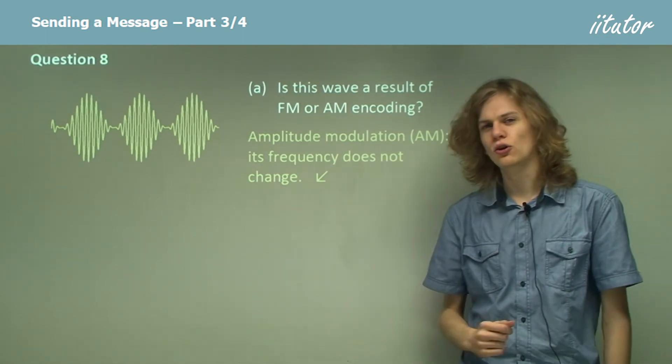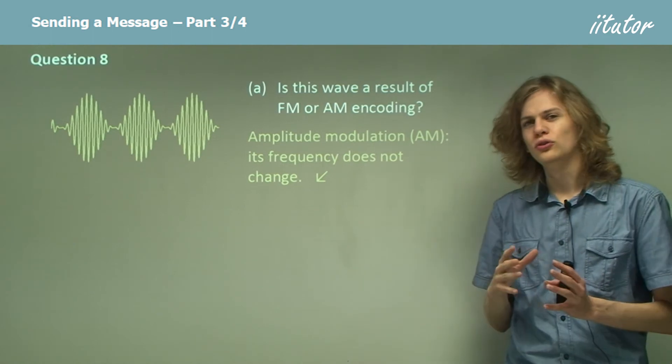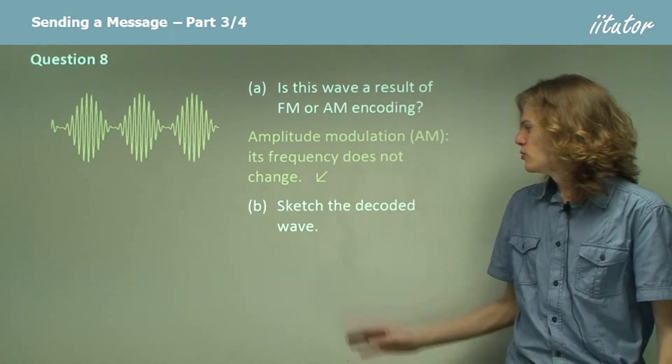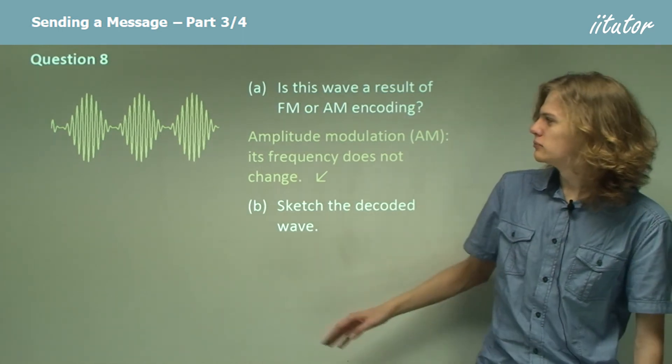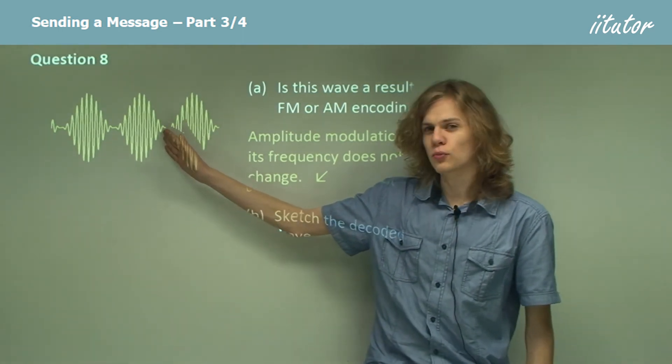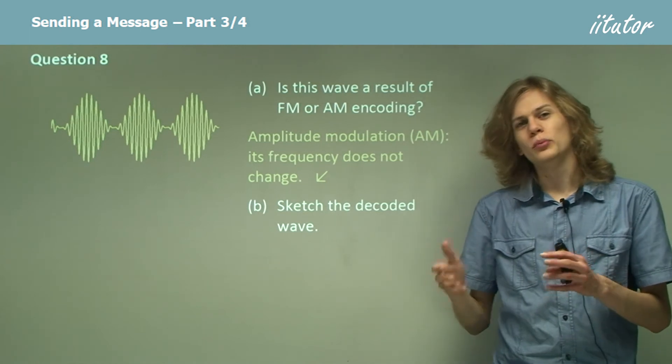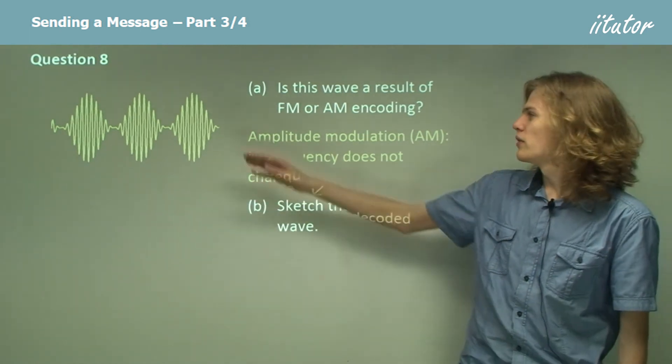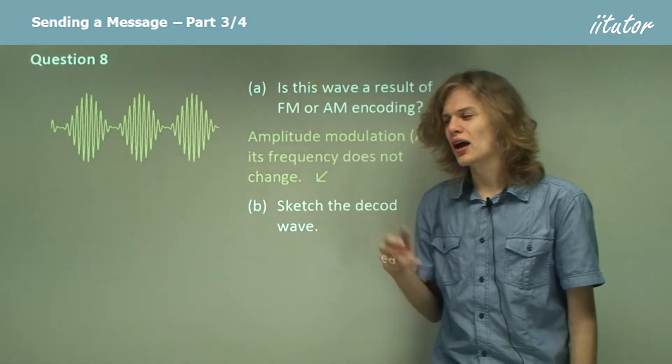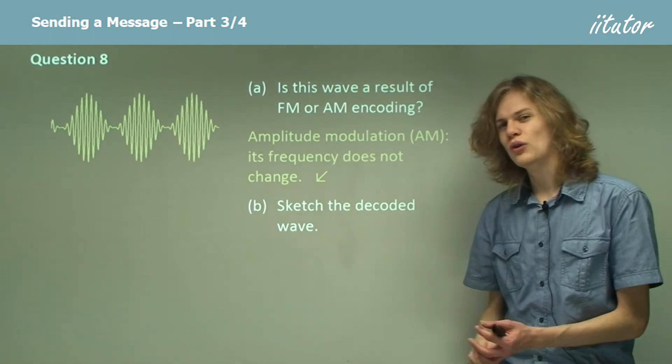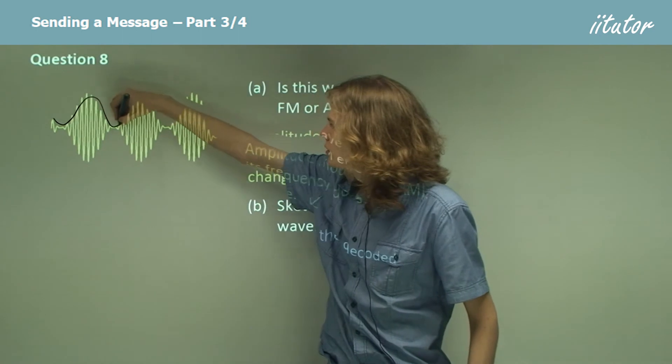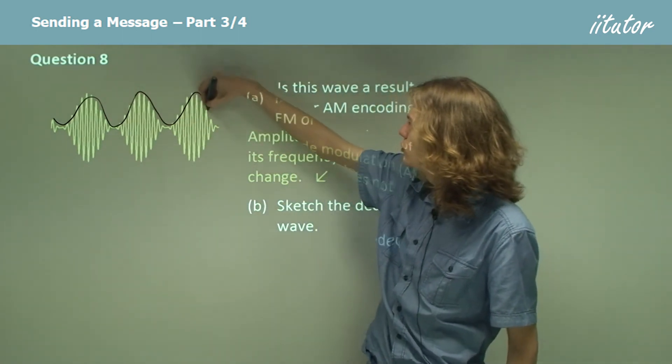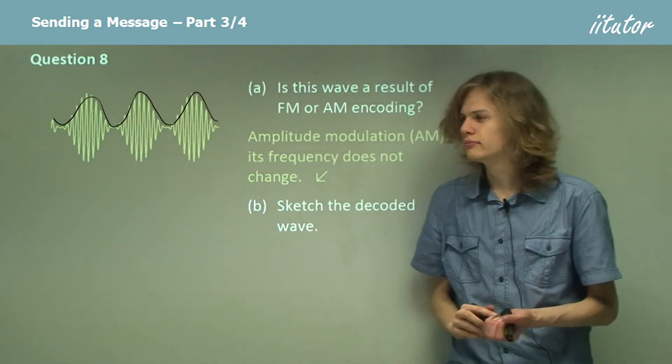The frequency does not change, the amplitude does. That means that the sound wave, or in this case the sine wave encoded, changes the amplitude. So sketch the decoded wave. Well, we know that when the amplitude is very small, the wave will be at a trough. When the amplitude is very large, the wave will be at a crest.